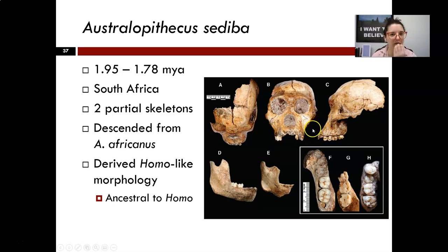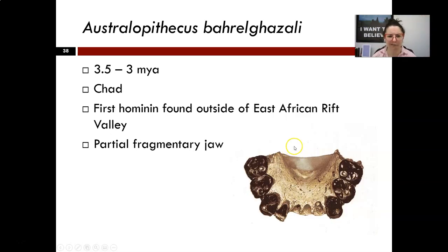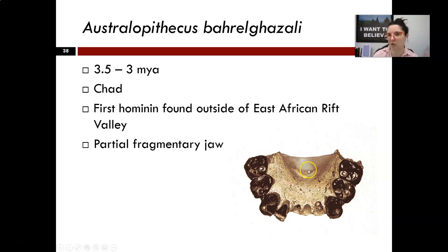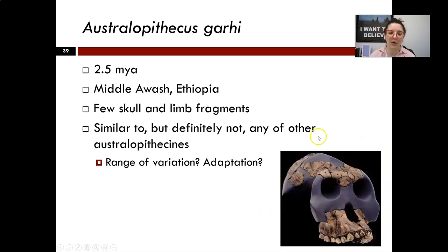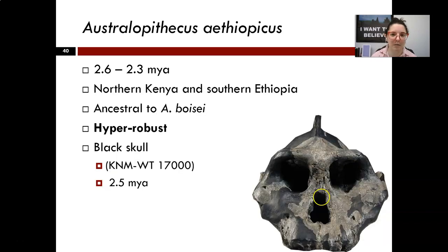We see a greater reduction in the face because with smaller teeth you get a smaller jaw — so instead of a projecting, prognathic face, we have a more upright face. What's going to happen with the genus Homo is an expansion of the cranial vault to incorporate a larger brain. The rest of the Australopithecines are fairly fragmentary — for example, in Chad we have Bahrelghazali, one of the first hominids found outside the East African Rift Valley. We also have fragmentary specimens like Garhi, very similar to other Australopithecines but distinct enough to raise the question of how similar something has to be before branching off into a separate species.